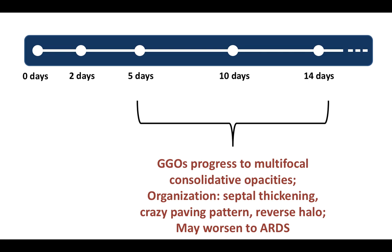As the infection progresses from day 5 to day 14, ground glass opacities will progress to multifocal consolidative opacities and there may be organization of the pneumonia. We may see septal thickening, crazy paving, reverse halo, and similar signs. The imaging features may also worsen to an ARDS pattern.